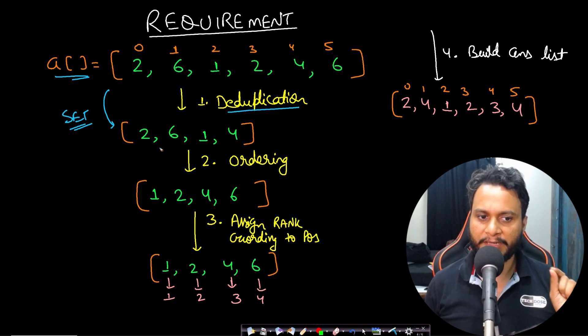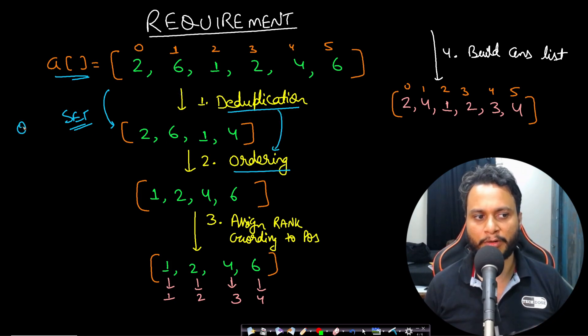But then after having done this step, we need the items in order. So ordering is needed. And therefore, if you want to do deduplication along with ordering, then you will need an ordered set for that. So we will take an ordered set to complete step one and step two together.